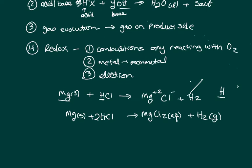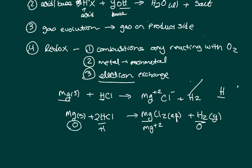This is a redox reaction because magnesium went from a charge of 0 — when standing alone, it was neutral — to positive 2 when hooked up to chlorine. That means there was electron exchange: magnesium lost electrons because it became more positive. The hydrogen went from positive 1 down to 0 in H₂, meaning it gained the electrons that magnesium lost. That's how you identify a redox reaction.